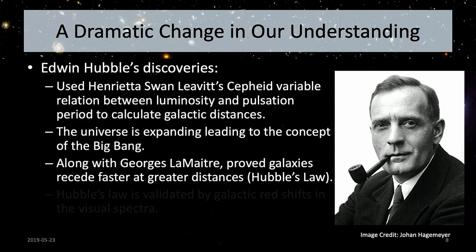He figured out that the further away an object was, the faster it was receding from us in general. What we're looking at appears similar to an explosion — things near the center move slower than things further away. If you rewound all of that, all the objects in the universe come back to the same point at the same time. That is really the notion of the Big Bang in its initial formulation.